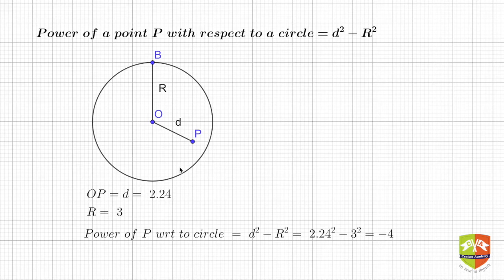Hence power of P with respect to the circle is defined as D square minus R square. So it's coming out to be negative, very clearly it is negative because P is inside the circle.